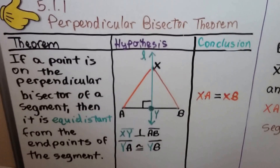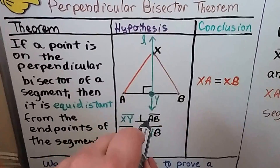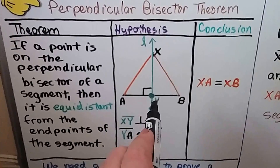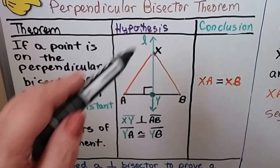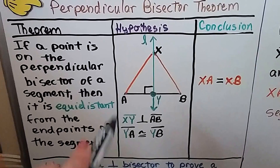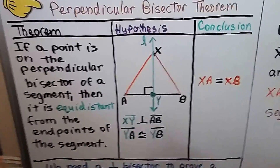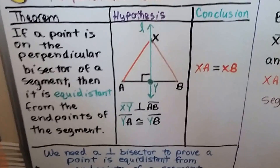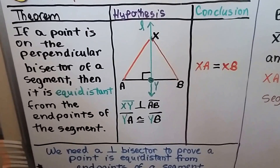Here's the Perpendicular Bisector Theorem. It says if a point is on the perpendicular bisector of a segment, then it is equidistant from the endpoints of the segment. We have segment XY perpendicular to AB, so YA is congruent to YB, and our conclusion is that XA equals XB. We need a perpendicular bisector to prove a point is equidistant from the endpoints of a segment.